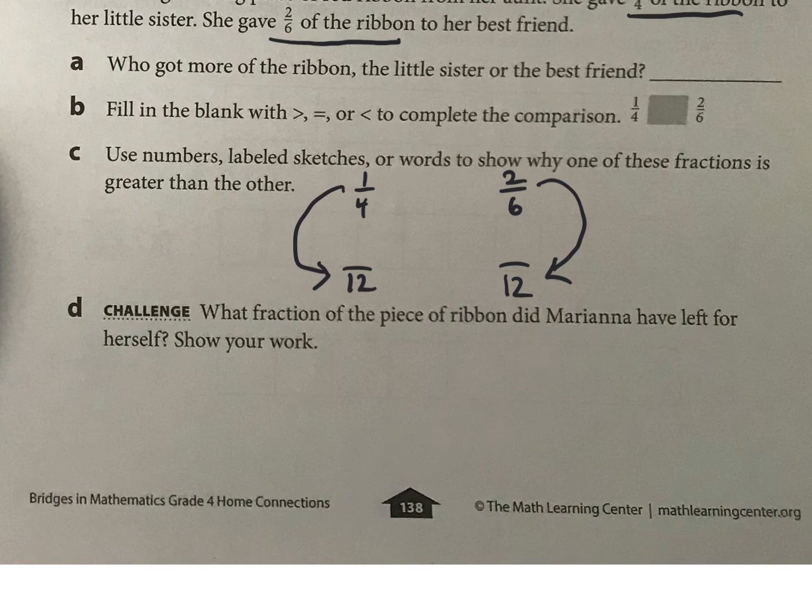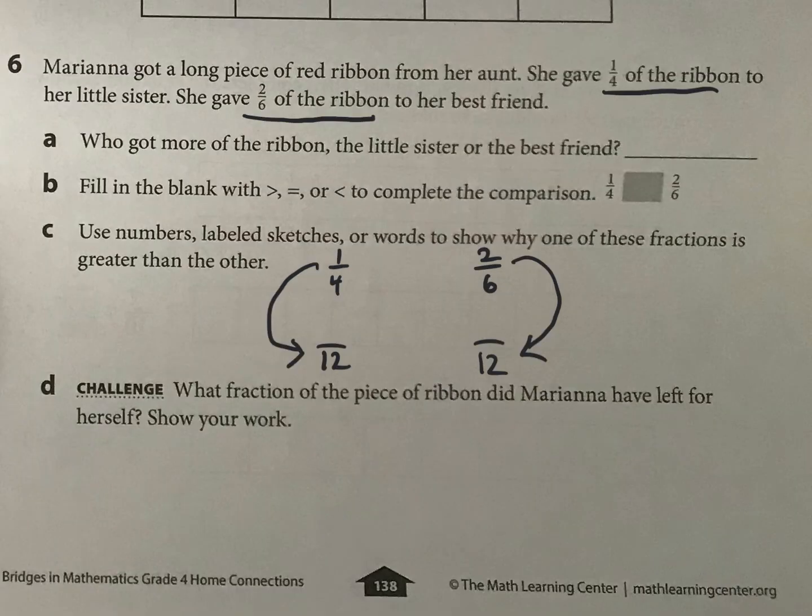So that's one way. And then, this is an interesting one. What fraction of the piece of ribbon did Mariana have left for herself? Okay, so let's do that. And to solve this, I really do need these twelfths up here, so I'm going to finish this thing I've already started.